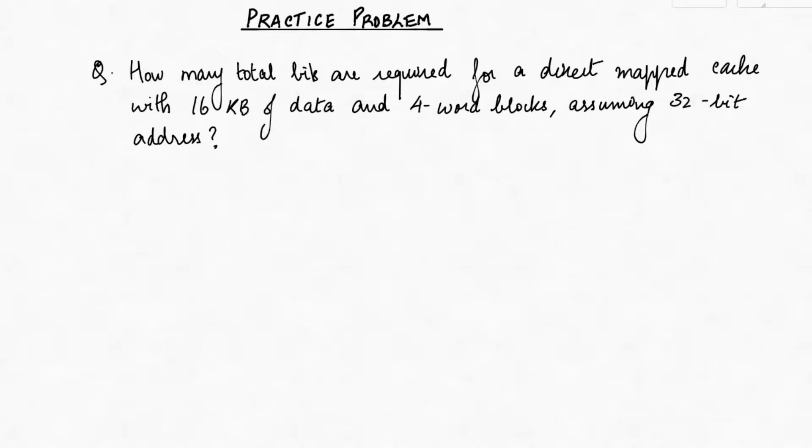How many total bits are required for a direct mapped cache with 16 kilobyte of data and four word blocks, assuming a 32-bit address?